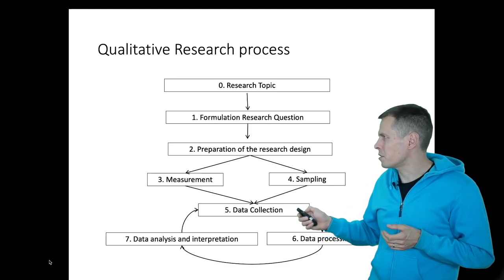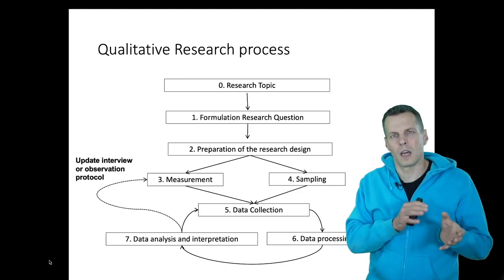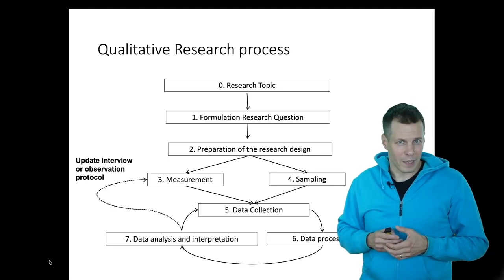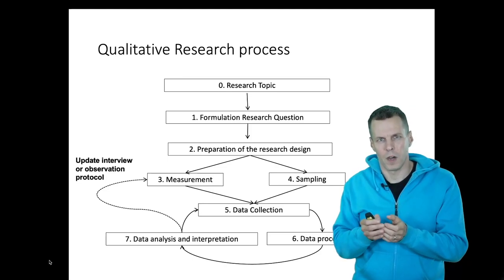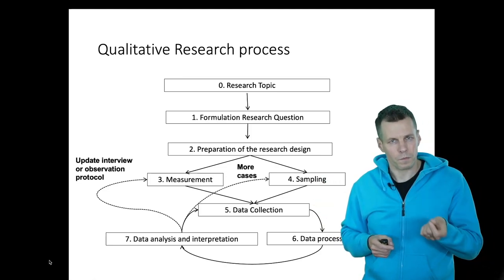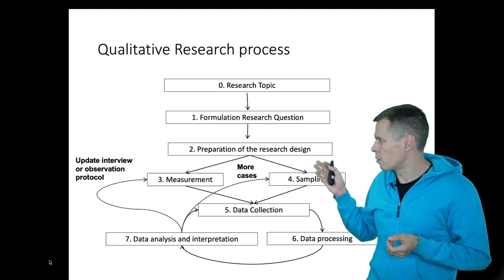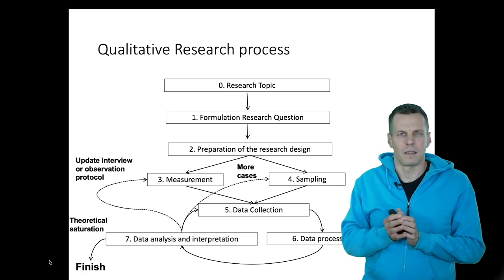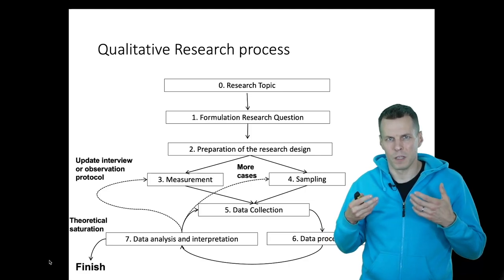So based on this analysis we might go back and update our interview or observational protocol. Once we have an emerging theory from the qualitative analysis process, we can update the interviews, ask more questions, and get more data that allows us to refine whatever theory we're working on. We can also go to more cases — we can identify that certain kinds of informants or cases are more useful and then get more of those. We only finish when we decide that no more questions and no more cases would change our theory — we have reached theoretical saturation.